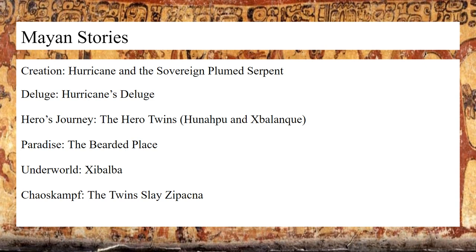Regarding the hero's journey, there are twin gods in the Popol Vuh named Hunahpu and Xbalanque, who are essentially an embodiment of a hero's journey because they performed many feats throughout the world and the underworld. The notion of paradise is known as the Bearded Place — a mountain where the lords of the Quiché people presided — and during that time it was relatively peaceful and calm, with no evils or difficulties, very similar to the Golden Age of Greek mythology. The underworld, Xibalba, is the place where the twins journeyed to meet the lords of the dead and play them in the ball game. And finally, the Chaos Kampf: the twins slay Zipacna, a beast who takes the form primarily of an alligator.